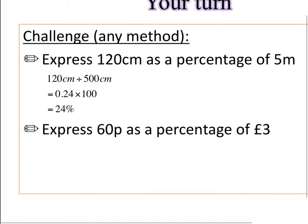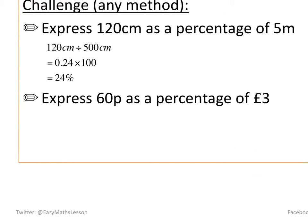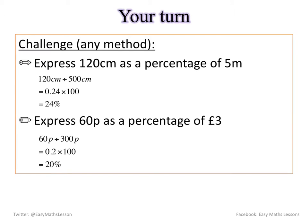And this one again I've got pence here. I've got pounds here. So what I've done is just made them all into pence. So 60 divided by 300, times by 100 which is 20%. Give me a thumbs up if you got them right.